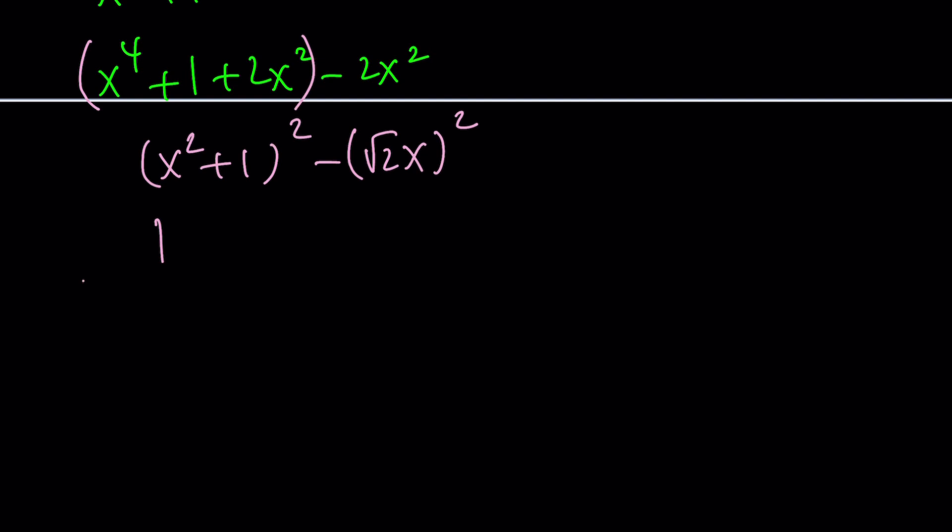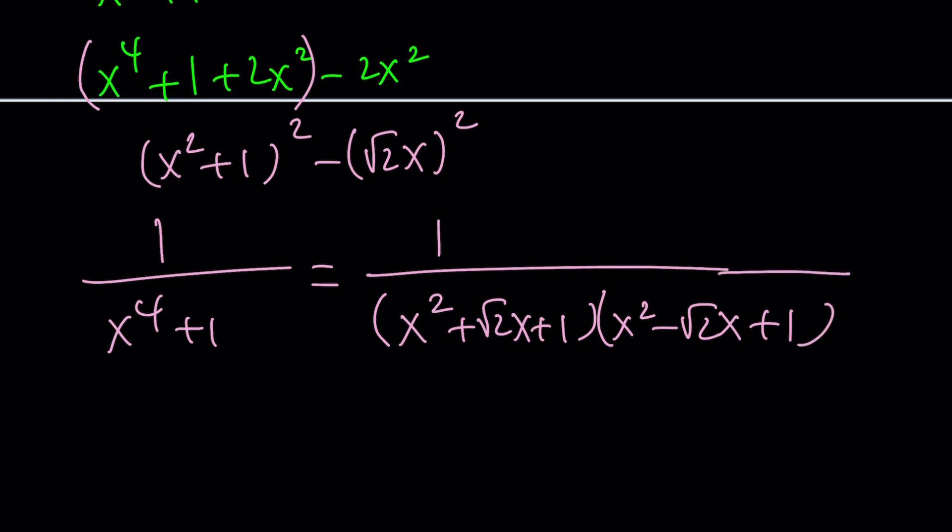Now, I can do the following. I can write this as 1/[(x^2 + √2x + 1)(x^2 - √2x + 1)]. From difference of two squares, I'm able to write these two factors. a^2 - b^2. Remember that.